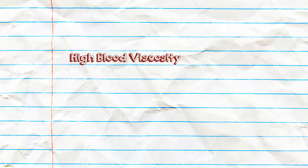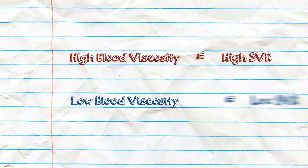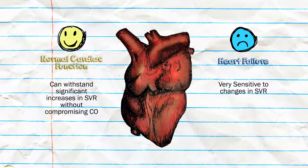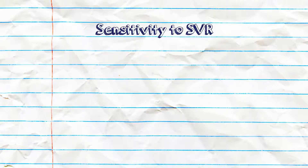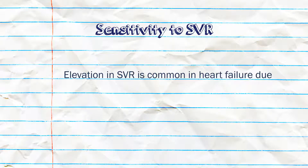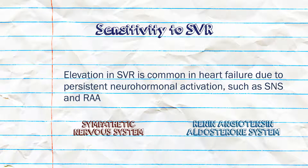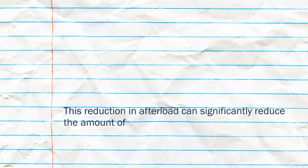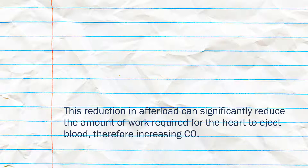Although largely determined by changes in diameter of blood vessels, changes in viscosity of blood also affect SVR. The higher the viscosity of blood, the higher the SVR; the lower the viscosity, the lower the SVR. Patients with normal cardiac function can withstand significant increases in SVR without compromising cardiac output. However, patients with heart failure are very sensitive to changes in SVR, and elevation in SVR is common in heart failure due to persistent neurohormonal activation such as SNS and RAAS. Afterload can therefore be reduced by using therapies that target this system or using direct vasodilators, significantly reducing the amount of work required for the heart to eject blood, therefore increasing cardiac output.